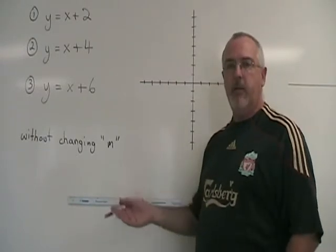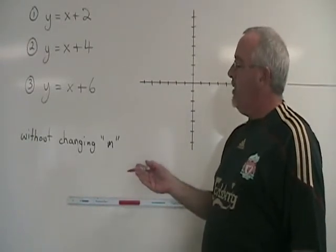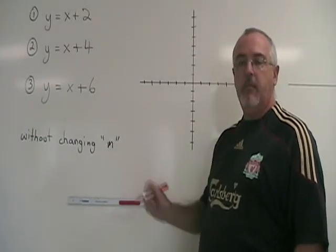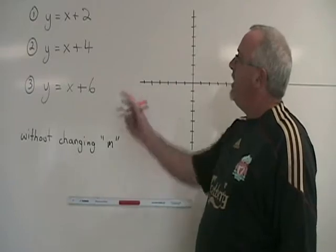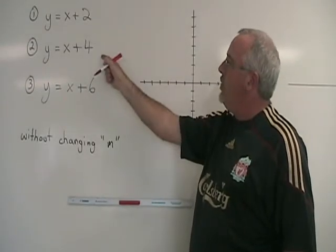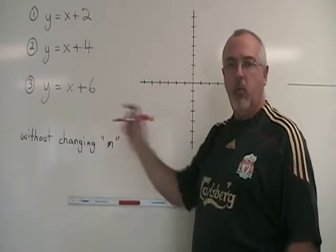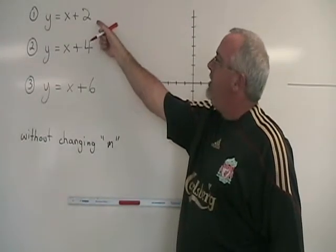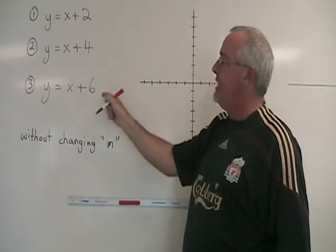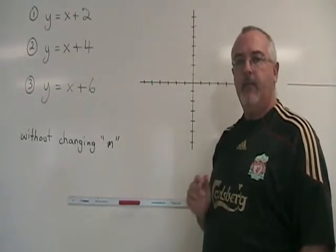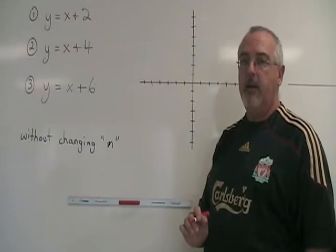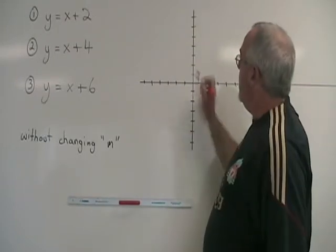Now we are going to look at what happens when we change our b, our y-intercept, without changing m, the slope. In equations 1, 2, and 3, the m equals 1 in all cases, but the y-intercept b is changing from 2 to 4 to 6. The effect of b is not a rotation, but a vertical translation of the line along the y-axis.